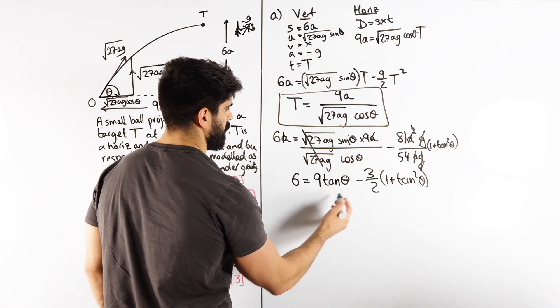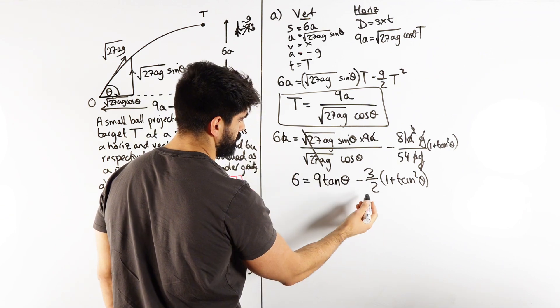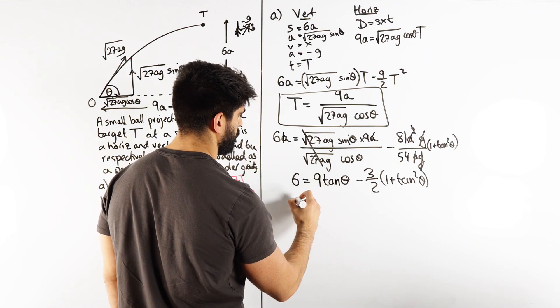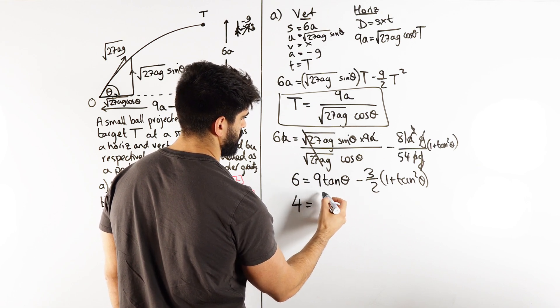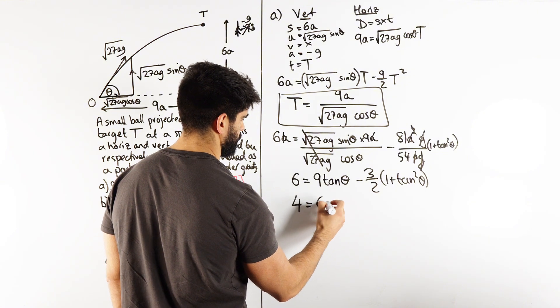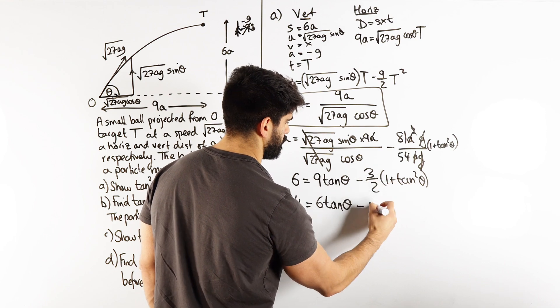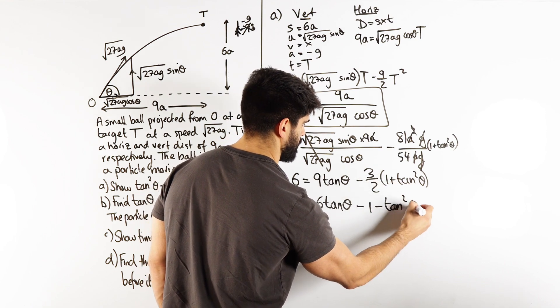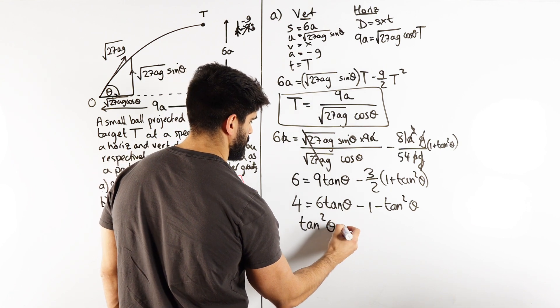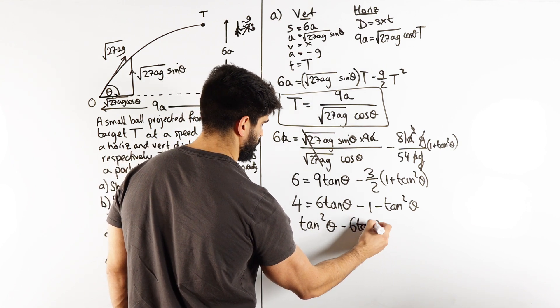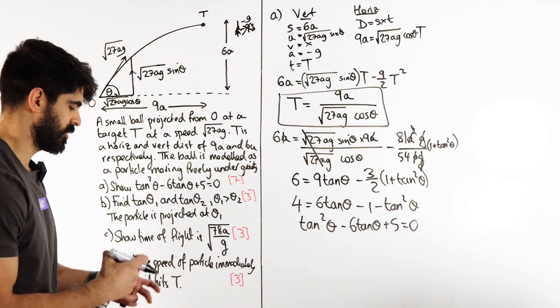Move that all over and I get tan²θ - 6tanθ + 5 = 0. There you go. Now that's shown.